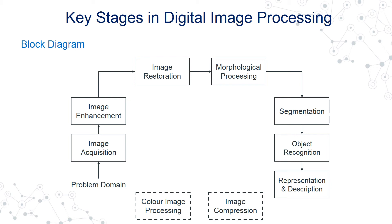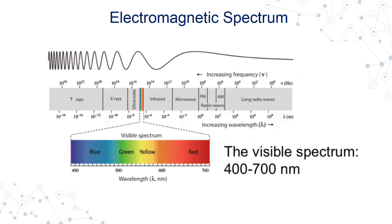Color image processing involves transforming the image into different color models or doing pseudo-color processing to extract or enhance certain tones.